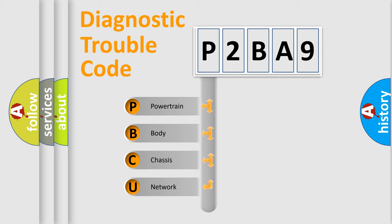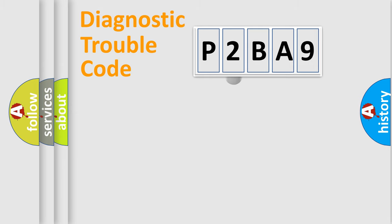We divide the electric system of automobile into four basic units: Powertrain, body, chassis, and network. This distribution is defined in the first character code.